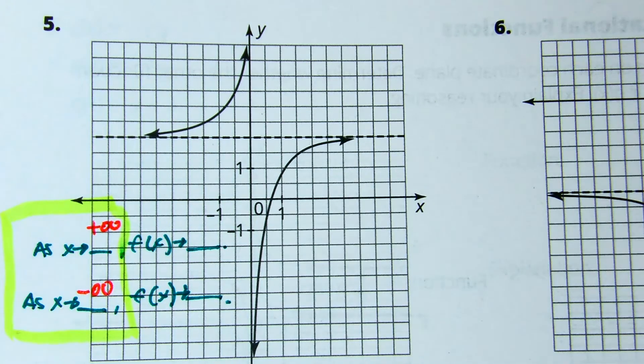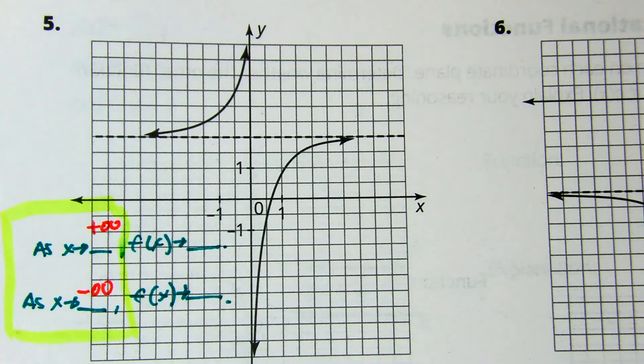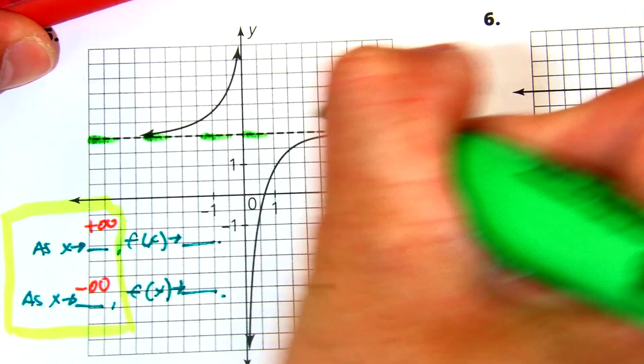Put your pen on your paper where the horizontal asymptote is. Class, don't worry about your fingers. What number is that? This is the horizontal asymptote. Class, what number is that?